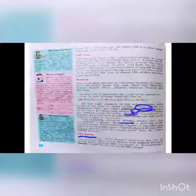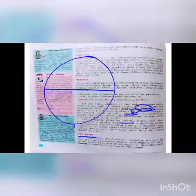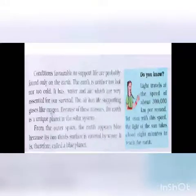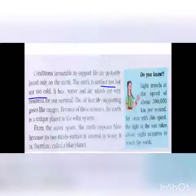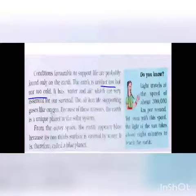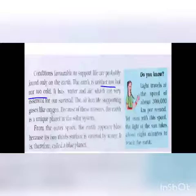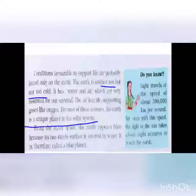Earth is the planet on which life exists. Its shape is geoid — broader at the middle and narrow at the poles. All favorable conditions for life are present on Earth. It is neither too hot like Mercury nor too cold like Neptune. Water, air, and land are all present here, and Earth is at exactly the right distance from the Sun to support life.